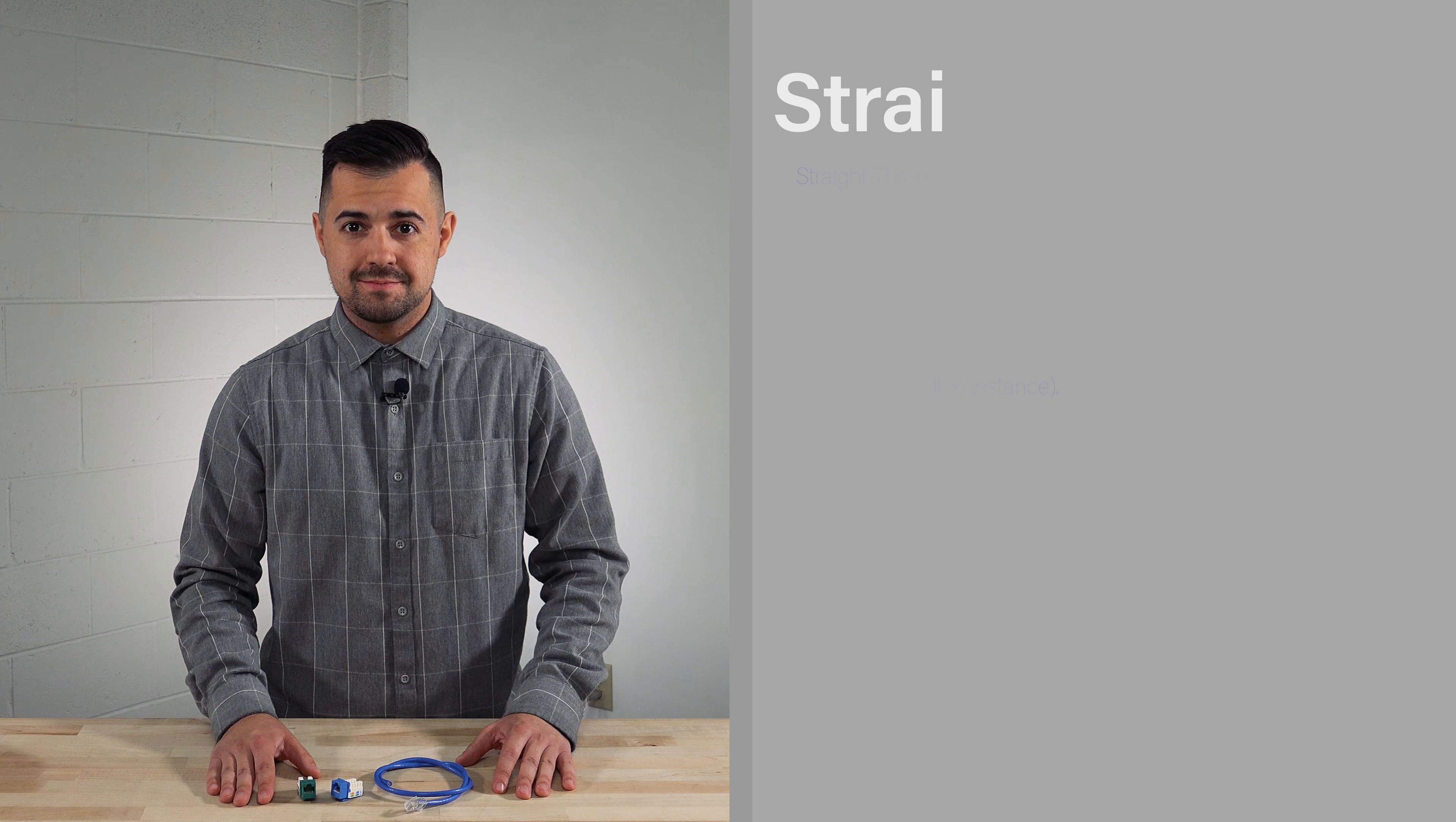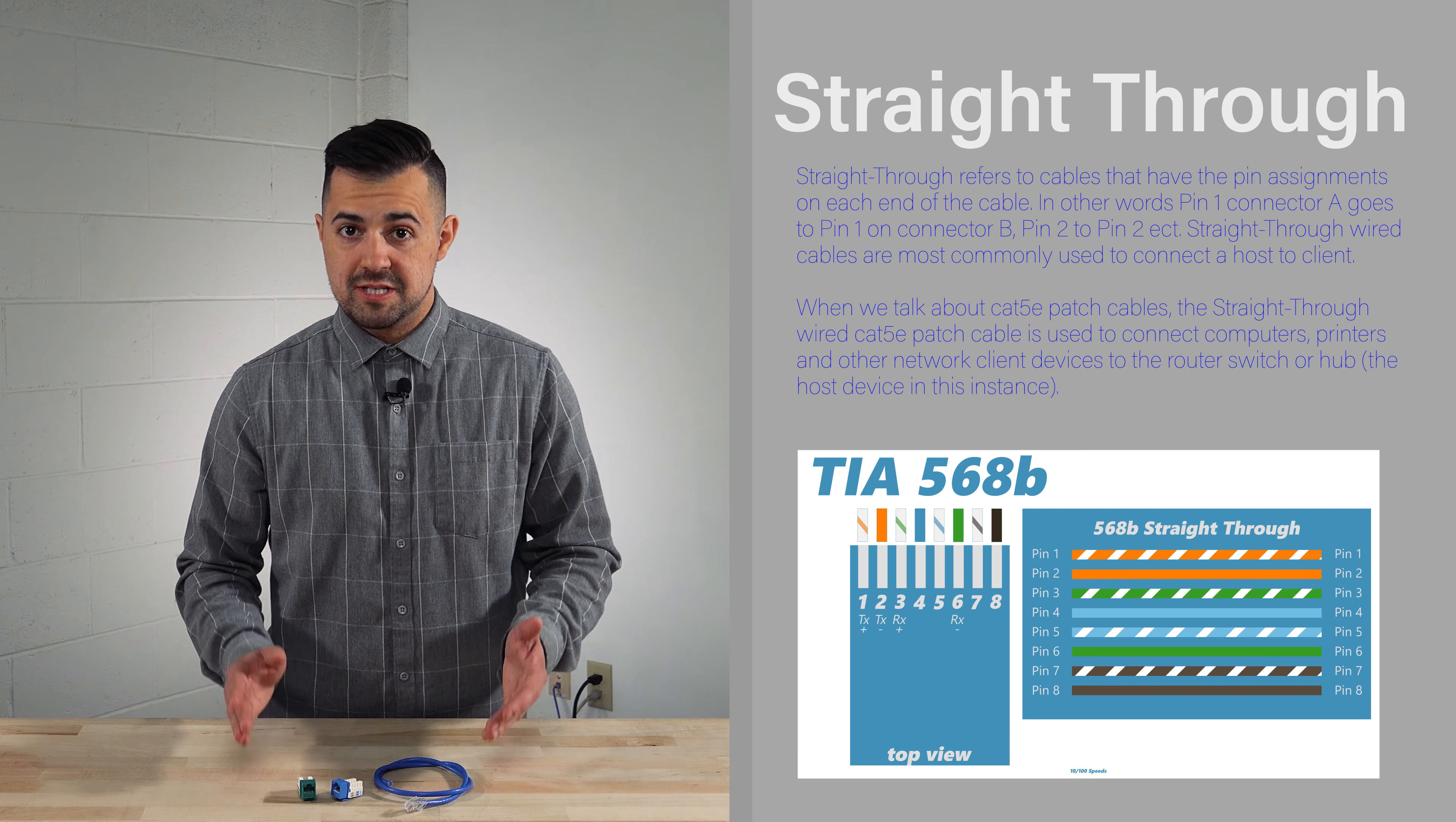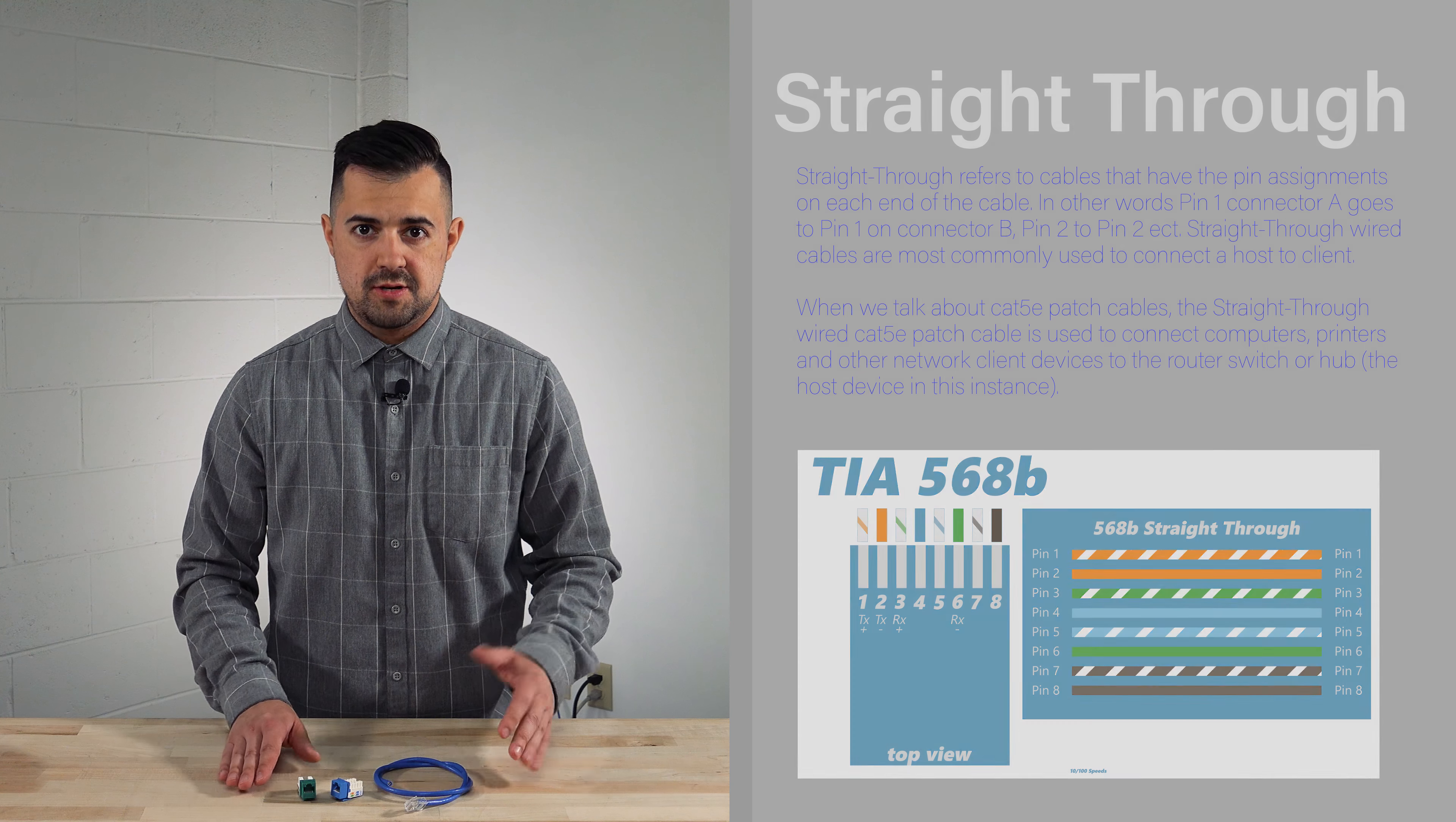So getting into the wiring, a straight-through cable is a cable that is wired with the same pinout on each side. As long as the cable has the same pinout on each side, it will function as a straight-through cable. For example, 568A on both sides or 568B on both sides. Looking at this diagram, you'll see that pin 1 goes to pin 1, pin 2 goes to pin 2, and so on.